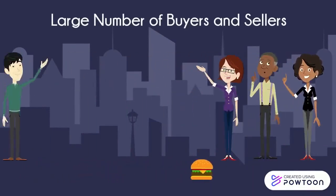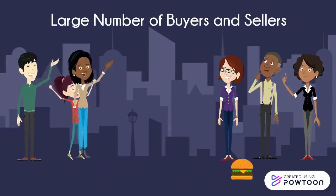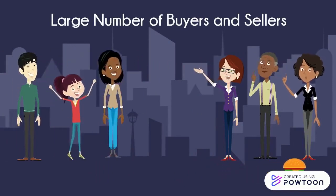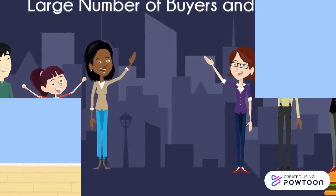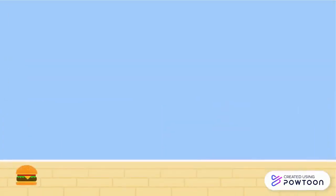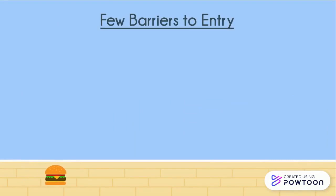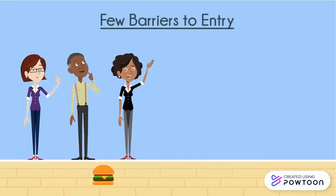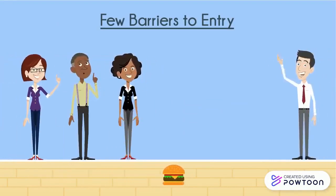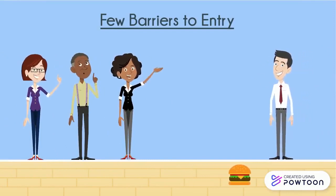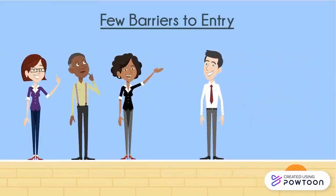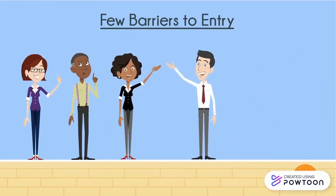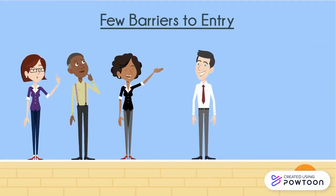Businesses in a monopolistic competition have a large number of buyers and sellers. Since there are a large number of buyers and sellers, there are few barriers to entry. This means that there are few obstacles preventing businesses from competing with each other. Many people can sell burgers and compete well against other businesses.